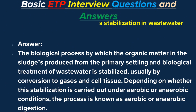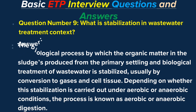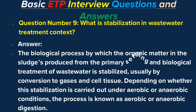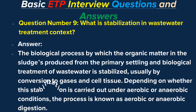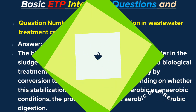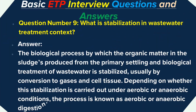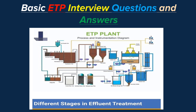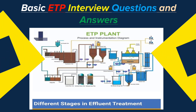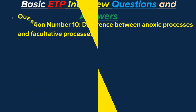Question number 9: What is stabilization in the wastewater treatment context? Answer. Stabilization is the biological process by which the organic matter in the sludge produced from primary settling and biological treatment of wastewater is stabilized, usually by conversion to gases and cell tissue. Depending on whether this stabilization is carried out under aerobic or anaerobic conditions, the process is known as aerobic or anaerobic digestion.